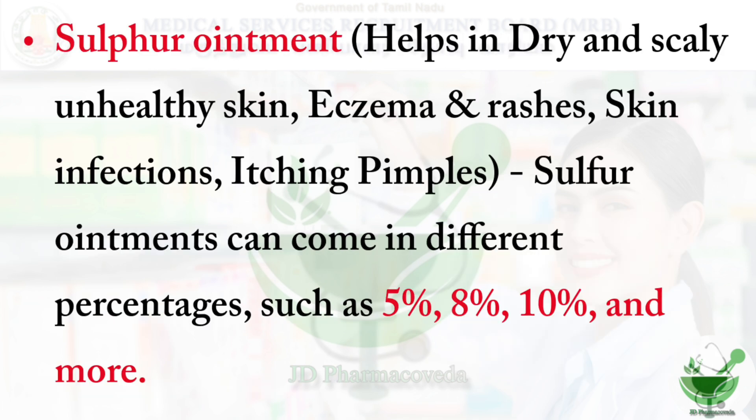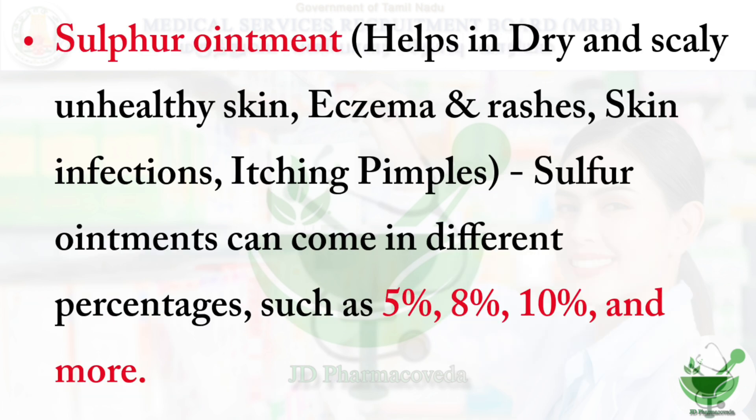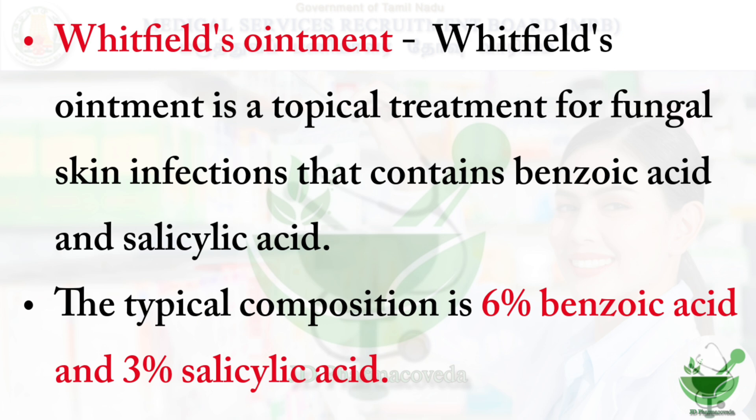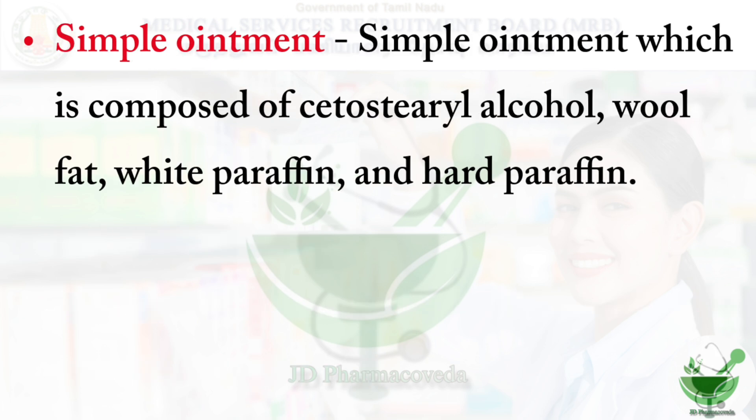Sulfur ointment helps treat dry, scaly skin, eczema, rashes, skin infections, and itching/pimples, available in concentrations of 5%, 8%, 10%, and more. Whitfield ointment contains 6% benzoic acid and 3% salicylic acid, used for treatment of fungal skin infections. Simple ointment is composed of cetostearyl alcohol, wool fat, white paraffin, and soft paraffin.